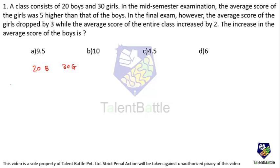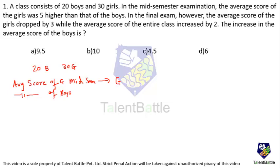First, let us consider the average score of girls in the mid-sem exam as g. Then the average score of boys in the mid-sem exam will be g minus 5, because in the mid-semester exam the average score of girls was 5 higher than that of boys. So if girls' average is g, then boys' average is 5 less, which is g minus 5.